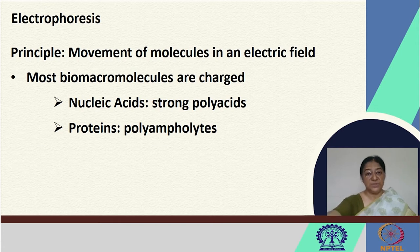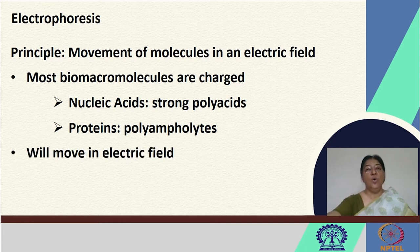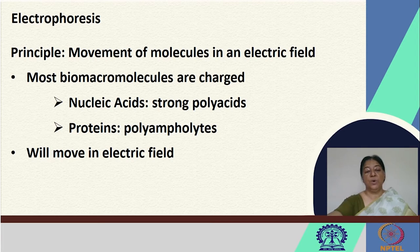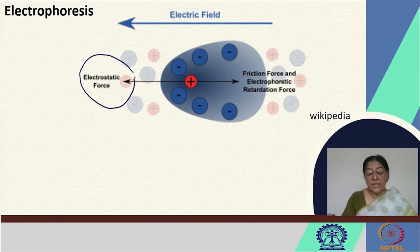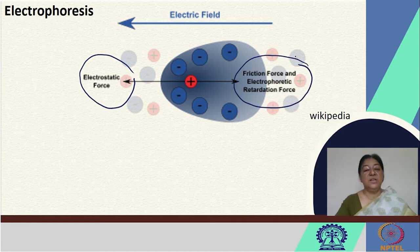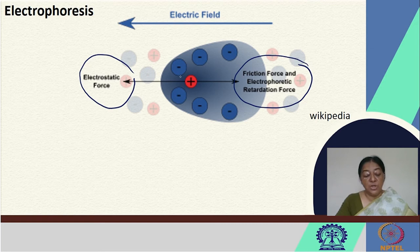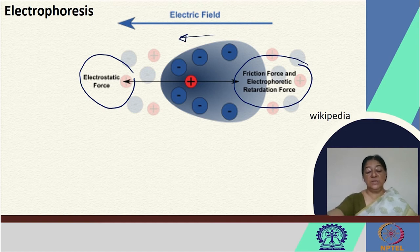The isoelectric point and the pH of the buffer will determine the charge on the protein, which is a very important aspect of our understanding — as we saw in ion exchange chromatography, where the pH of our eluting buffer depends upon the isolation or characterization of the protein. Because of these charges, the biomacromolecule will move in the electric field. We have two opposing forces: one is the movement due to the electrostatic force, and the other is due to the frictional force and a retardation force from the buffer or the gel network, which retards the motion of the biological macromolecule.